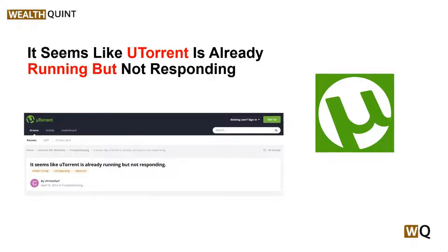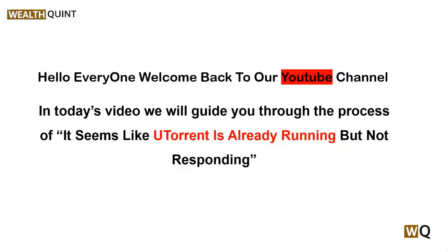Hello everyone, welcome back to our YouTube channel. In today's video, we will guide you through the process of fixing the uTorrent error. To download torrent files on Windows, you need a torrent client named BitTorrent or uTorrent. uTorrent is a popular client that helps you upload and download free torrent files, like free applications, with very flexible options. If you are using a torrent client on Windows 7 or 11, you might encounter this error message.